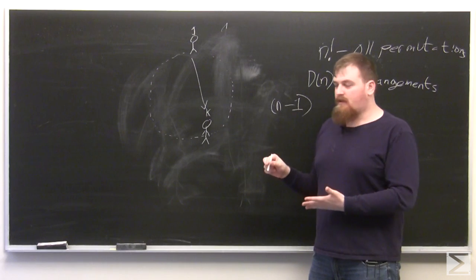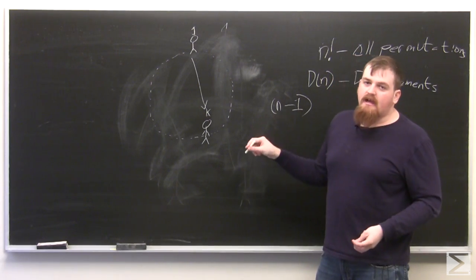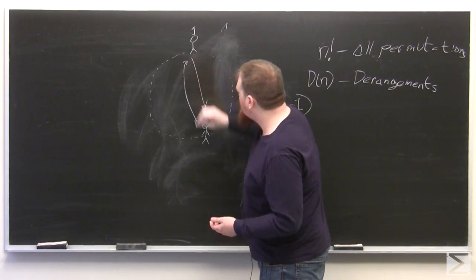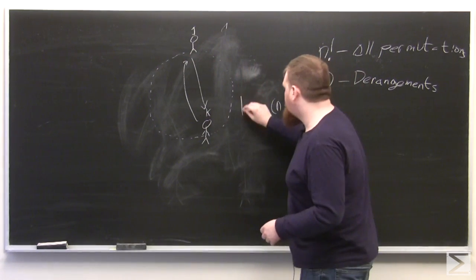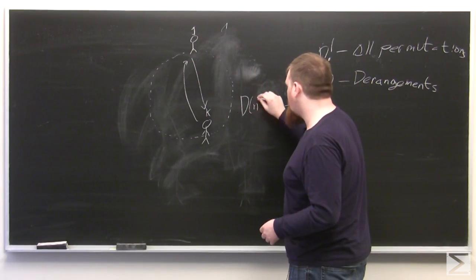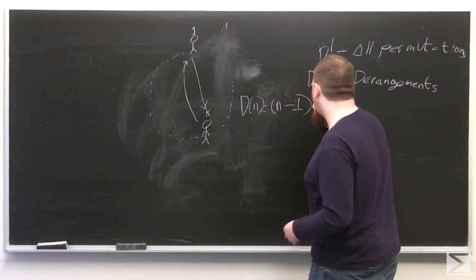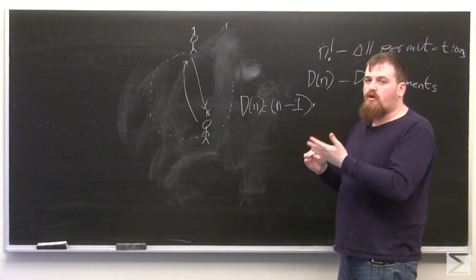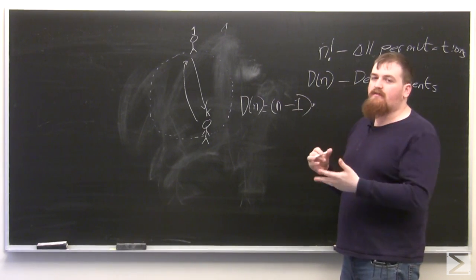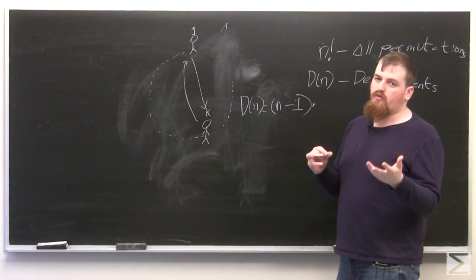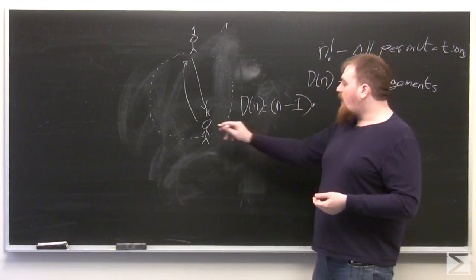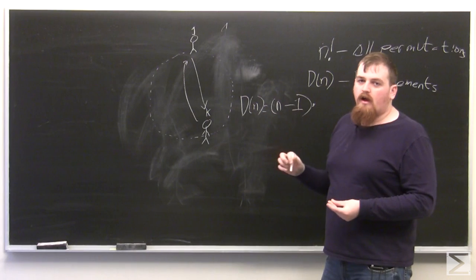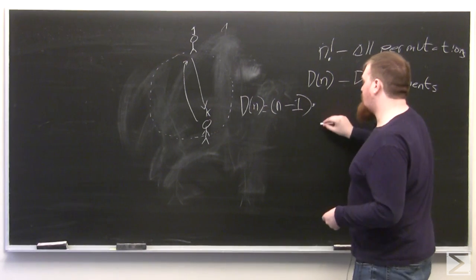Now that we have person k, there are two possibilities. The first possibility is that person k sends their present — or gets mapped — back to person 1. So we're calculating d(n). Here, everybody else in the group is going to have behavior that looks like a derangement of size n minus 2. So under the case where person k sends their present back to person 1, there are a further d(n minus 2) possibilities.